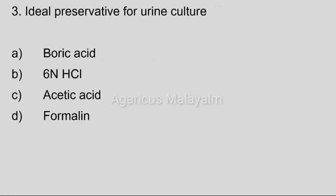Third question: Ideal preservative for urine culture. Answer options — Option A: Boric acid. Option B: 6-normal hydrochloric acid. Option C: Acetic acid. Option D: Formaline. Correct answer: Option A, Boric acid.